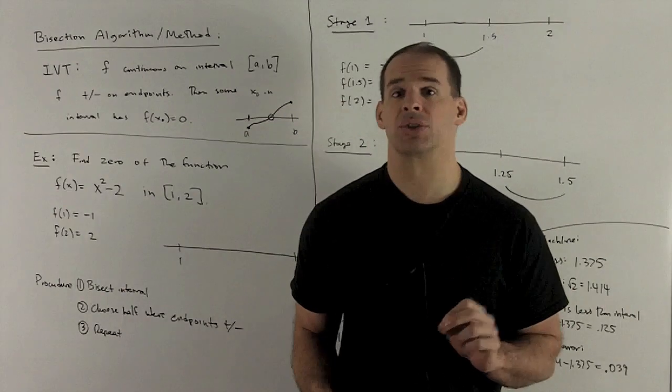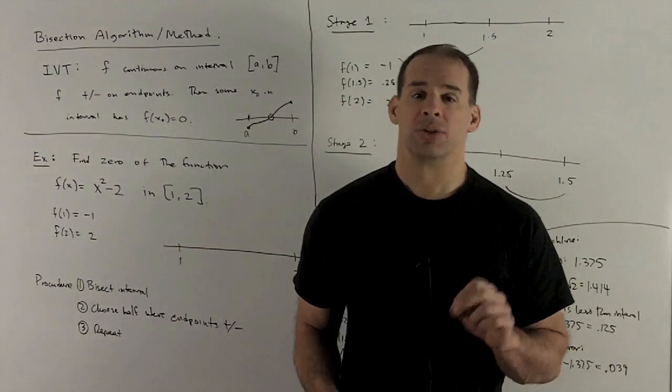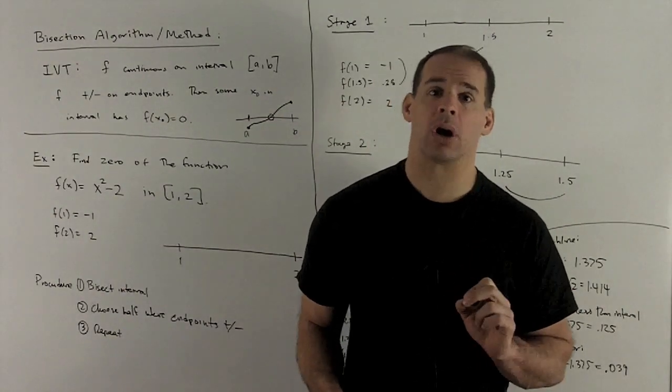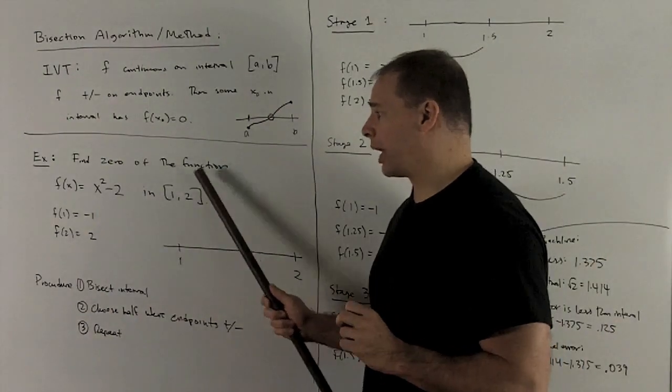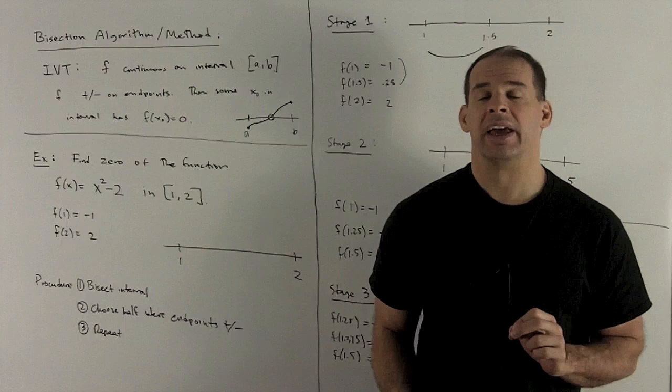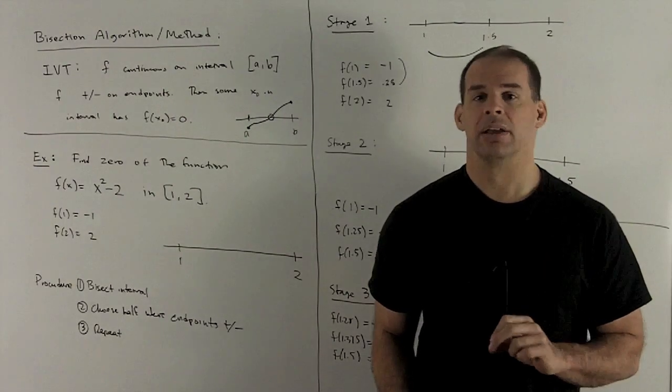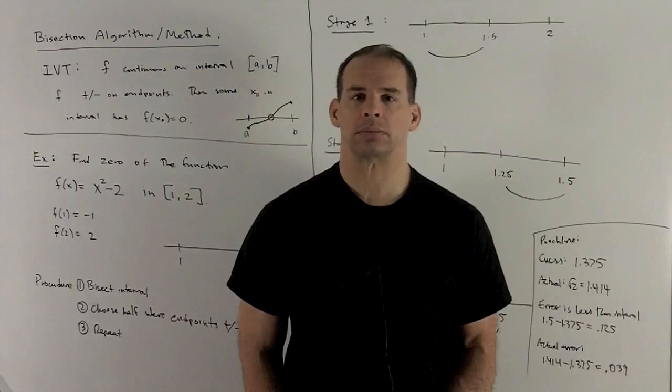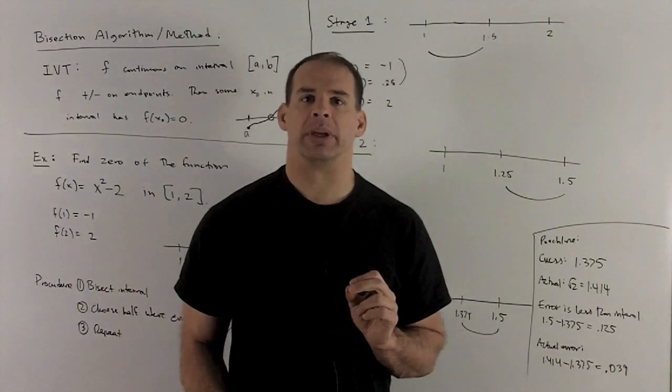Square root of 2 is roughly 1.4, so that's going to land squarely in our region. So we kind of already know the answer, but we just want to see how we can get close to that using some algorithm.